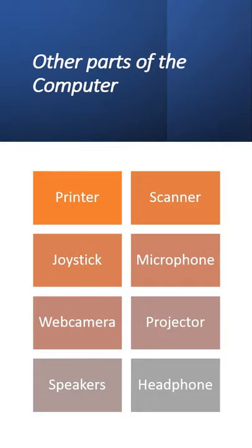Other than the main parts, the computer system also has many other parts. They are connected to the CPU box by wires, like printer, scanner, joystick, microphone, web camera, projector, speakers, and headphone.